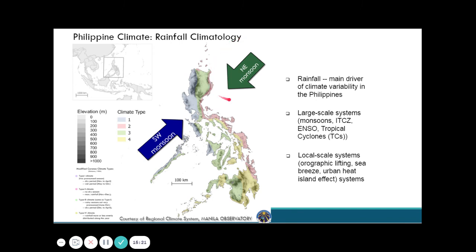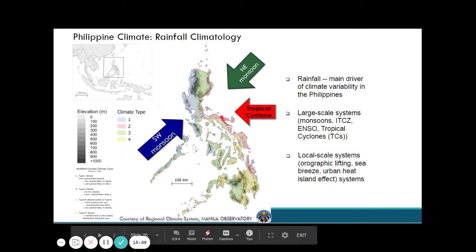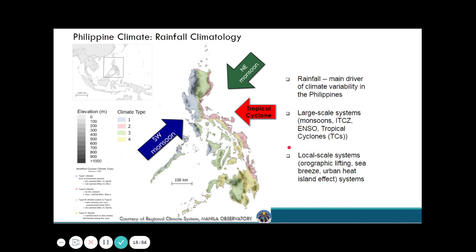Tropical cyclones are one of the main ingredients of our rainfall climatology. Also important is the Intertropical Convergence Zone, which dances around the equator. Most of the time, Davao is affected by the ITCZ. Other factors include climate variability such as El Niño and La Niña.